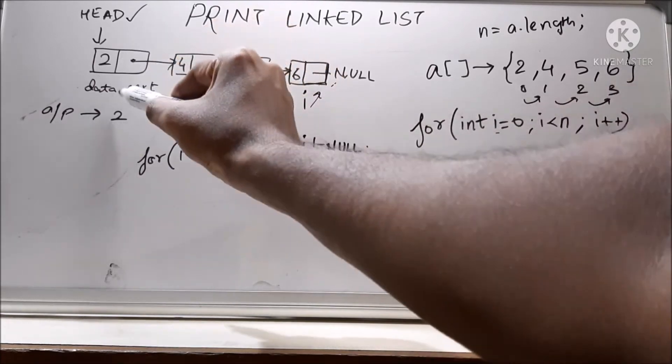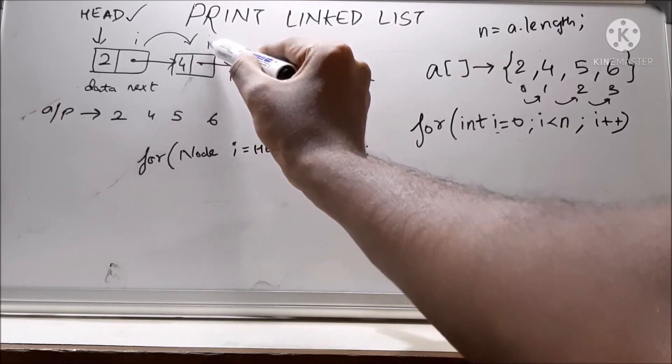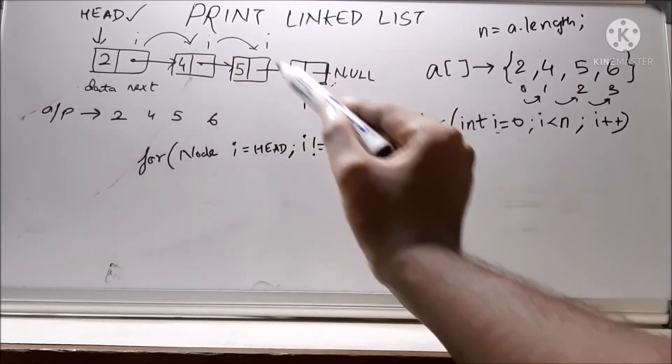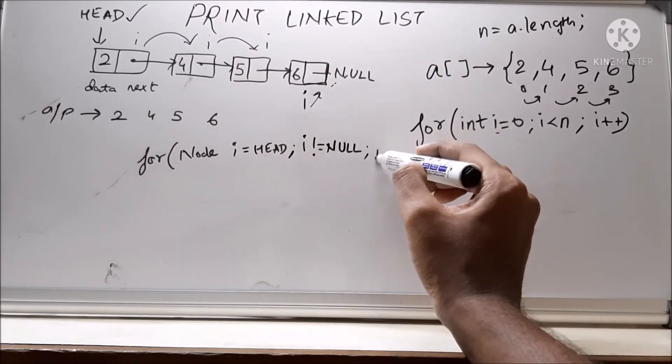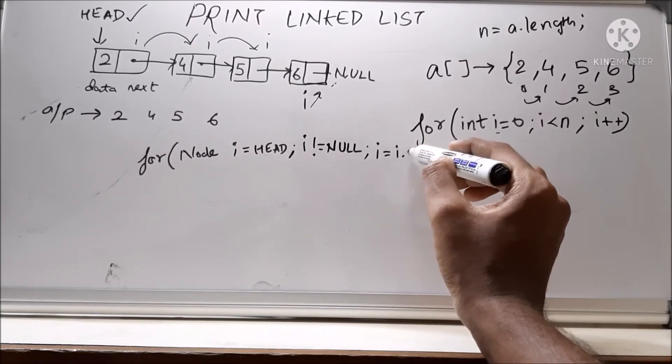We have to make i to move from this node to this node, then this node and keep on moving, right? So we will say i equal to i dot next.